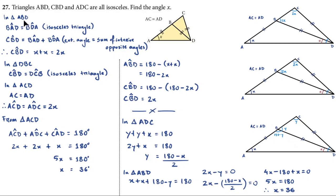In this question, triangles ABD, CBD, and ADC are all isosceles — find the angle X. This is the diagram given in the question, and these are the enlarged versions. We can solve this in three different ways. I will start with the easiest one.